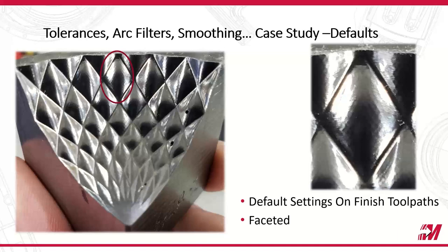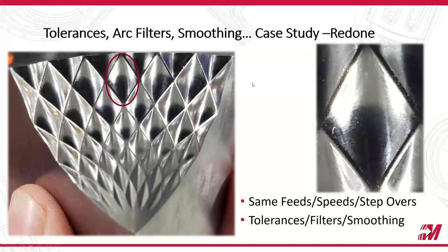Our default settings on that arc filter tolerance page is a 1/1000th of an inch tolerance with no arc filter, no line filter, and no smoothing settings. And what you're going to see is all this diamond pattern. But yet, if I go and really take the time and refine those settings — without changing step over, feed, speeds, any tooling, holding, work holding — just working in parameters in the toolpath, I can clean that up and get a really nice looking part. This one was significantly tighter tolerances with a smoothing tolerance applied to it.